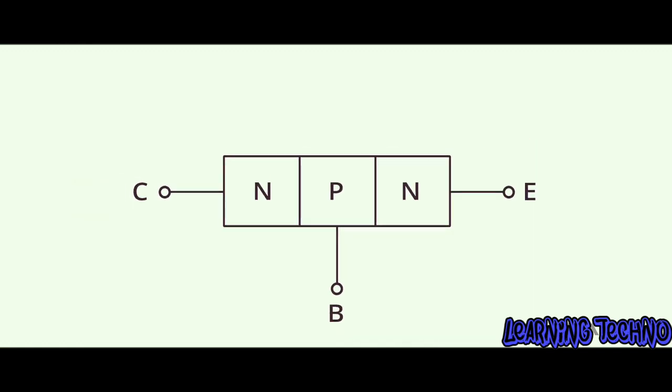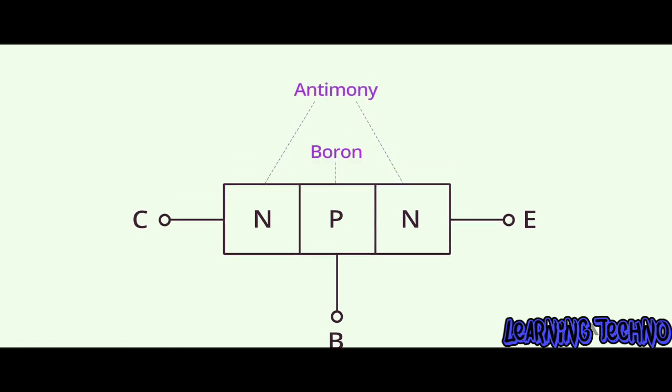Now we know a transistor is basically a sandwich made of three chunks of a semiconductor material doped to make the P chunks more positive and the N chunks more negative.